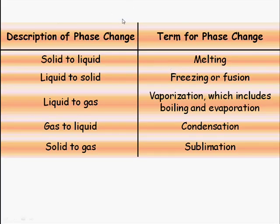First let's go through some descriptions of phase changes. When we go from a solid to a liquid, that's called melting, like when ice melts. When we go from a liquid to a solid, the other way around, that can be called freezing or fusion. When we go from a liquid to a gas it can be called vaporization, which includes boiling and evaporation. Going from gas to liquid is called condensation, and going from a solid to a gas is called sublimation.